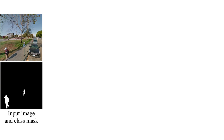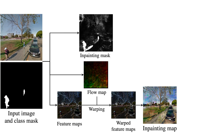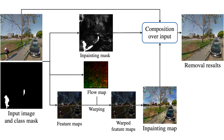Our removal network takes an input image and a class mask as input, and outputs an inpainting mask and an inpainting map. We synthesize the removal image by composing the inpainting map via the inpainting mask over the input image.